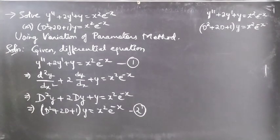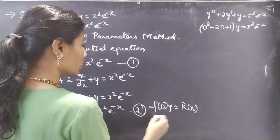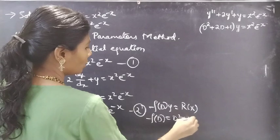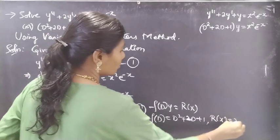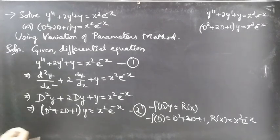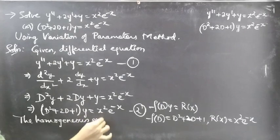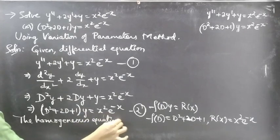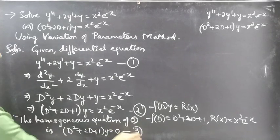This is in the form f(D)·y = R(x), where f(D) = D² + 2D + 1 and R(x) = x²e^(-x). The homogeneous equation of equation 2 is (D² + 2D + 1)y = 0. Consider this as equation number 3.